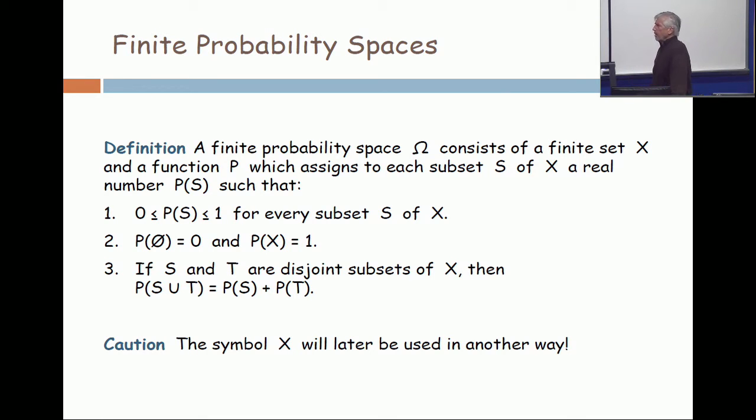And then the important third property is that if you have two disjoint subsets, s and t, the probability of the union is the sum of the probability of s plus probability of t. No restrictions on p other than these.